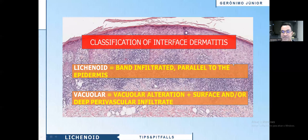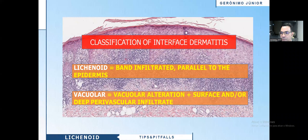The classification of Interface Dermatitis includes Lichenoid Dermatitis, when you see band infiltrate parallel to the epidermis, and Vacuolar Dermatitis, when you see vacuolar alteration and superficial and/or deep perivascular infiltrate.